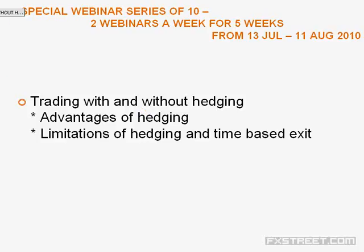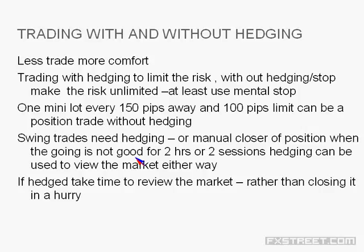Some platforms, like US trading platforms, don't offer a hedging facility. If hedging isn't available and you're afraid of using a stop because market volatility could trigger it prematurely, how can one plan trading without a stop and without hedging? In strategic trading without those facilities, you only take positions, keep limits, and are prepared with your usable margin for adverse moves.